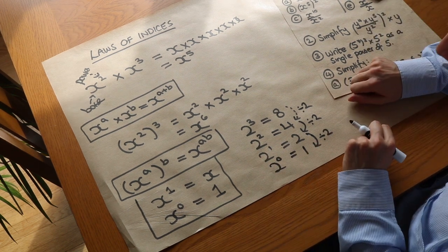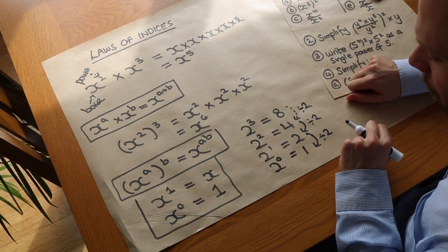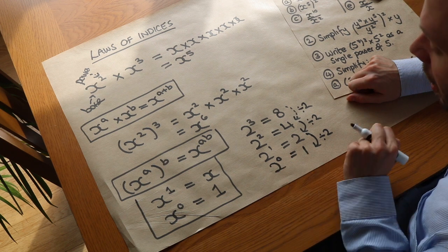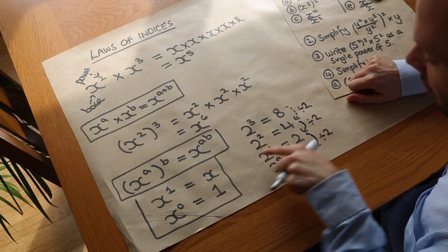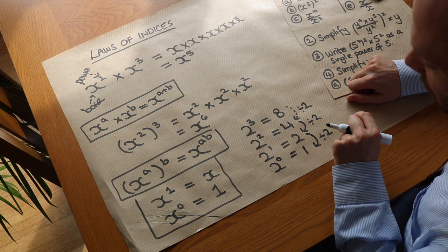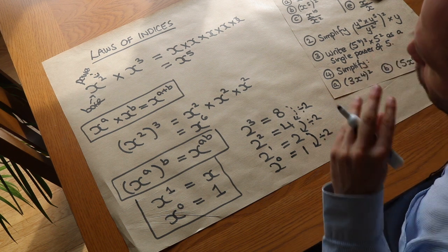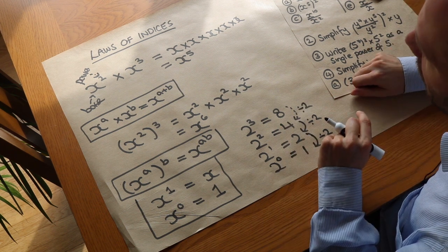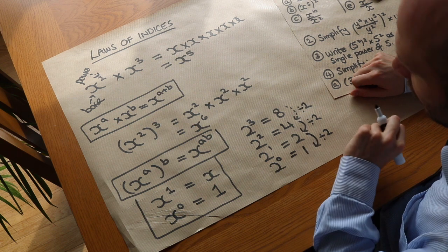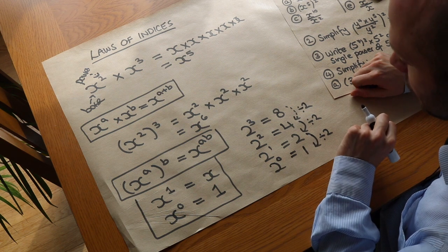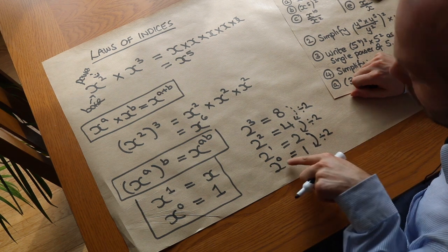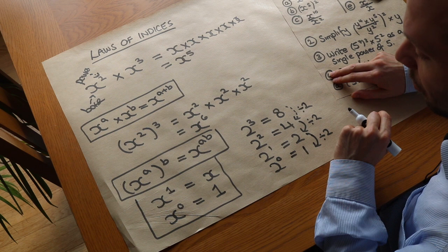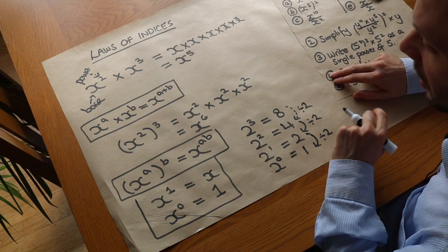That confuses some people because you think you're multiplying zero twos together. But as soon as the power is not a positive integer, we can't think of powers as how many times we're multiplying the number together. You can also have negative powers and fractional powers, but we'll explore those in another video.